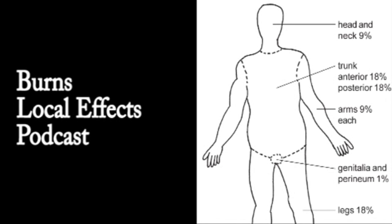Older people can be at increased risk as well because of reduced mobility and poor coordination. Often a common feature, as with all accidents, is alcohol intoxication. People that are drunk are more likely to have accidents and more likely to get burned.